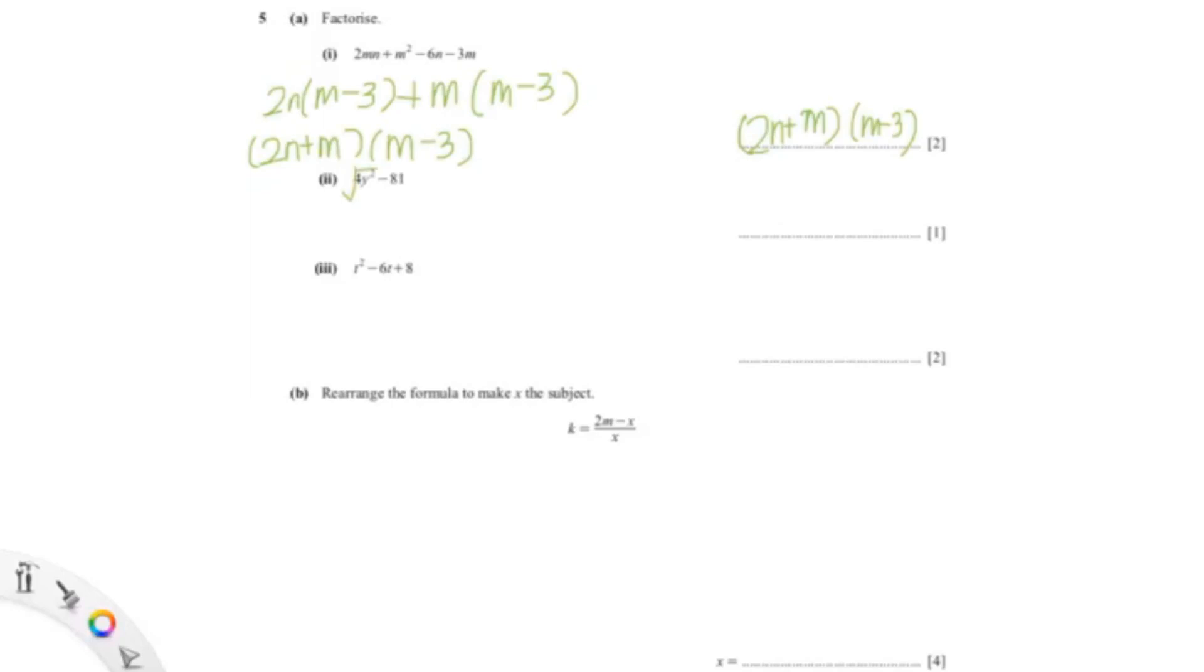For the next question, you can see that 4 and 81 are square numbers, so you can square root them, which gives you 2y and the square root of 81 is 9. So 2y+9 and 2y-9.